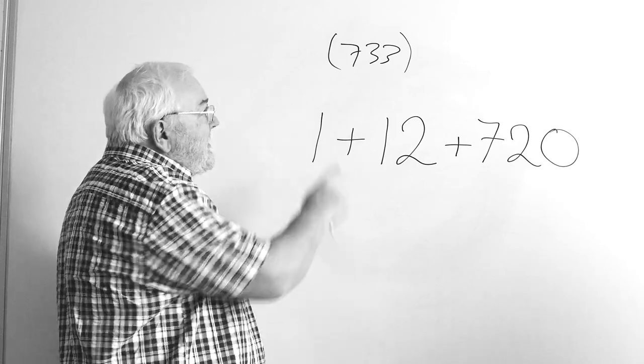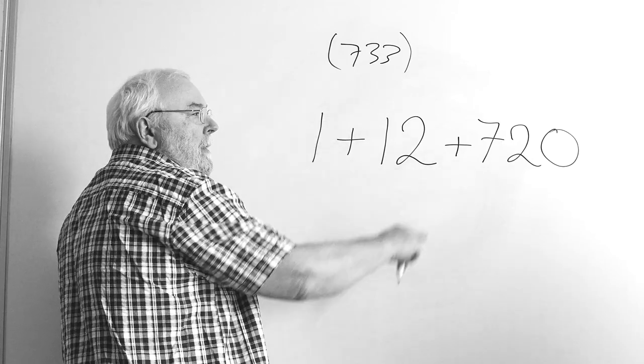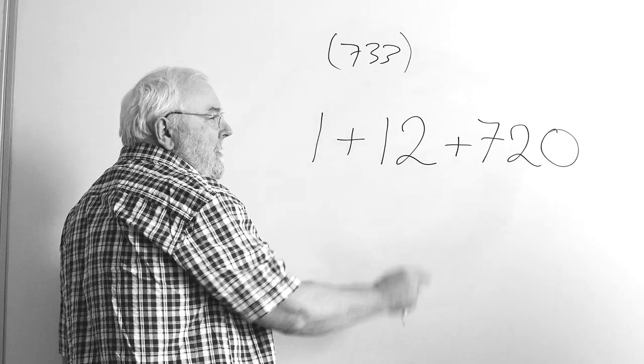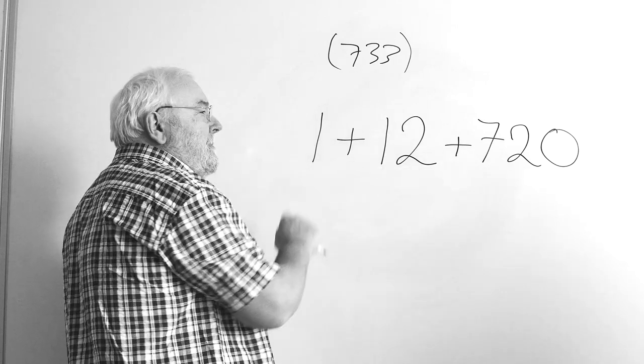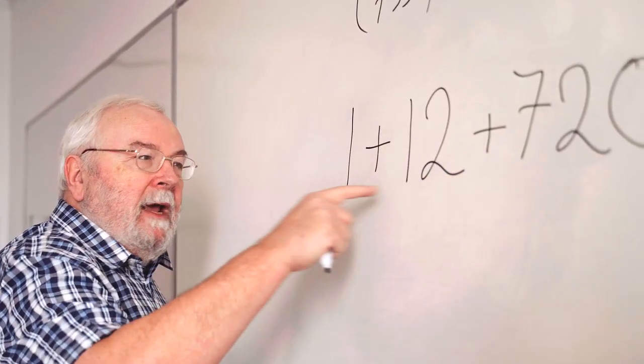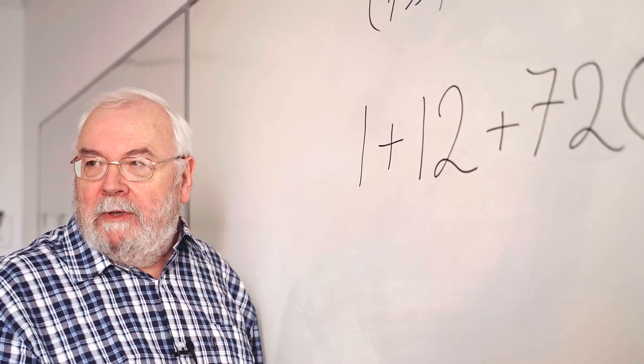Now you can see that this number is not a multiple of three, because this is a multiple of three, and this is a multiple of three, and that isn't. So this whole number, when you add it all up, can't be a multiple of three.